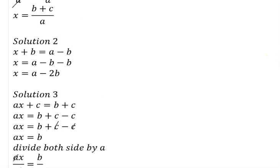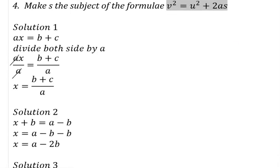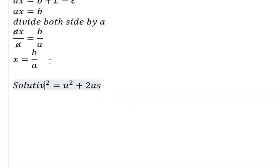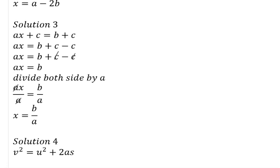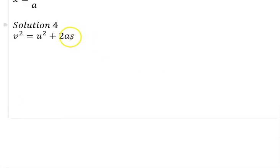Question 4: we have v squared equals u squared plus 2ax, and we have to make x the subject of the formula. This looks similar to question 3, because what is disturbing x again comes in two forms — 2a in multiplication form, and u squared in addition form. We follow the same principle to achieve our aim.